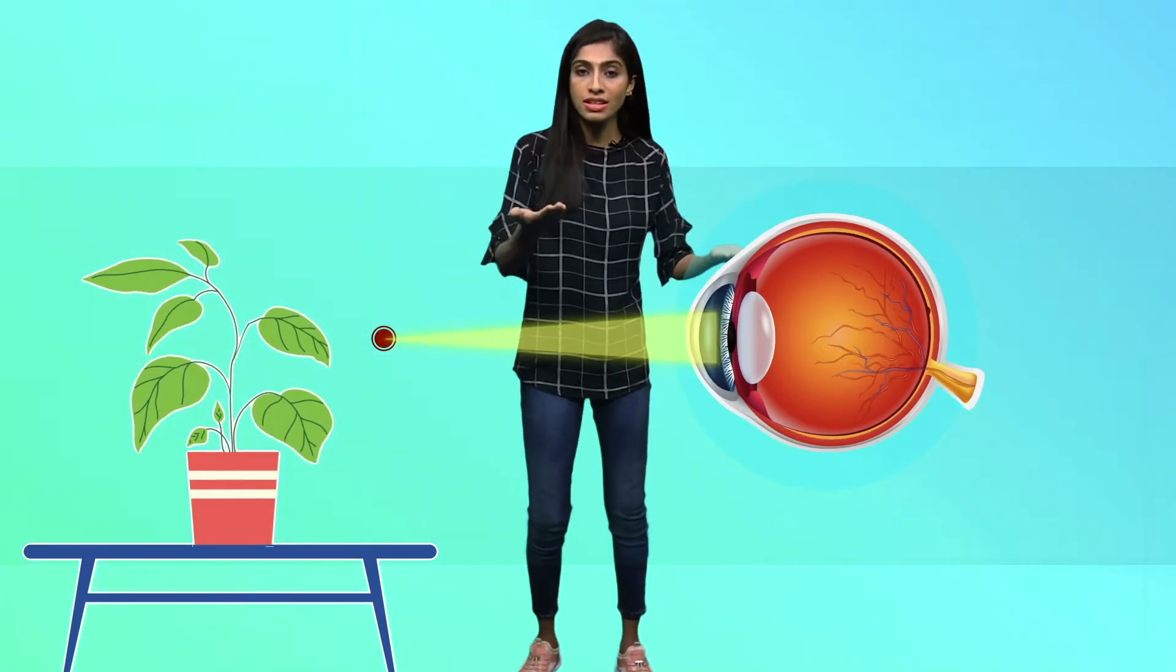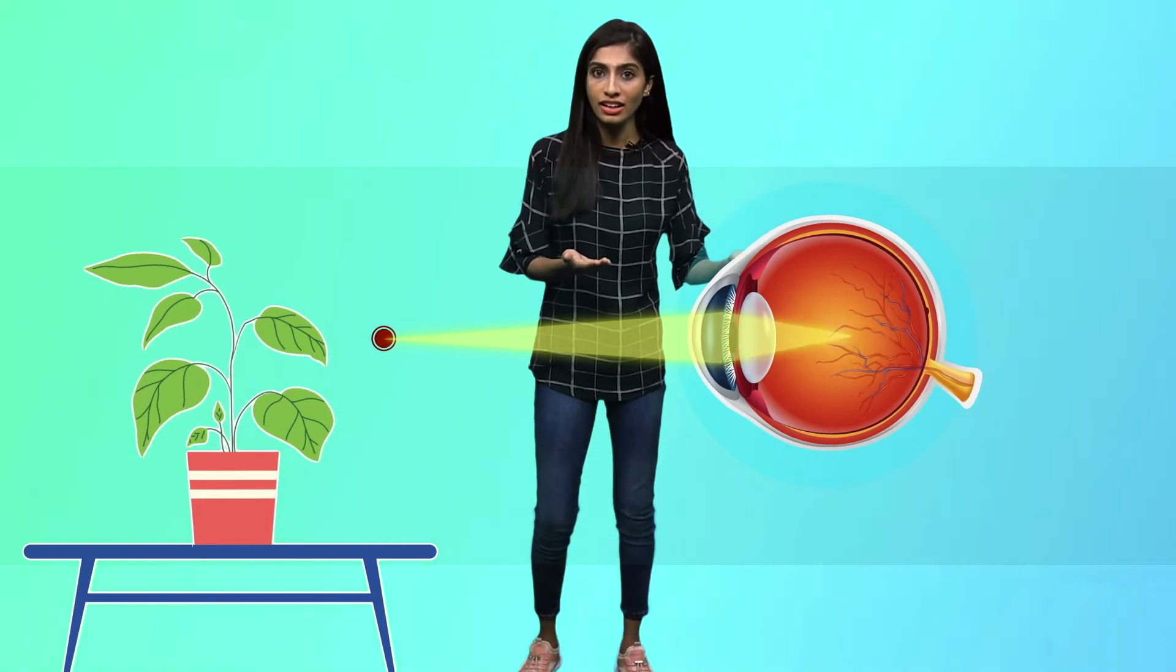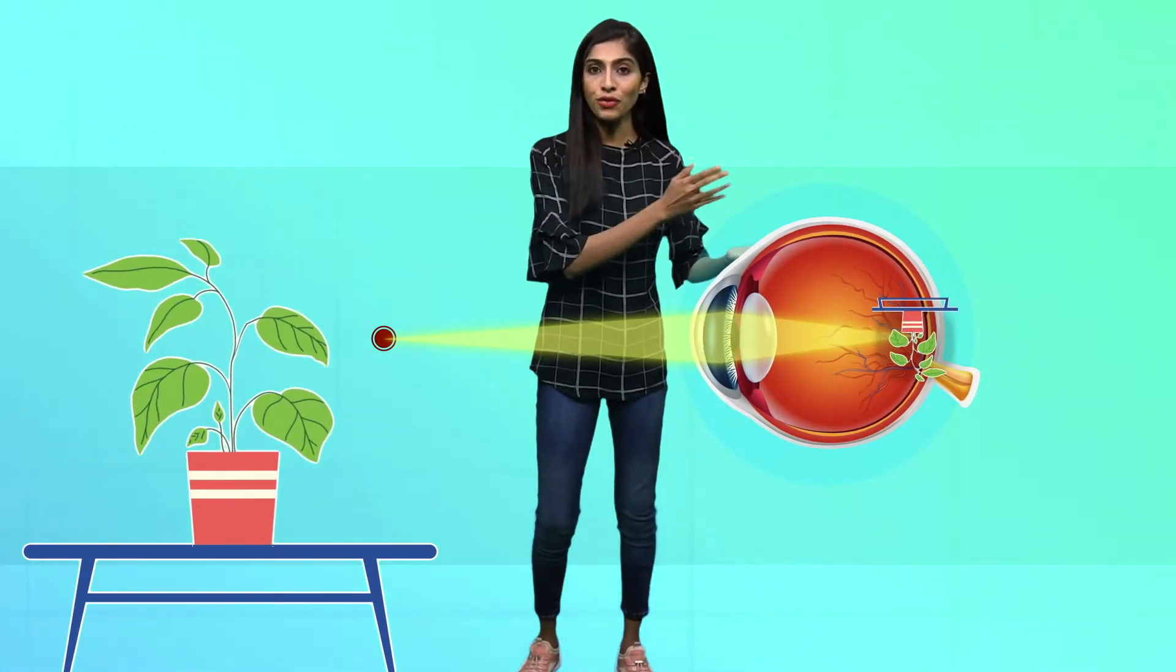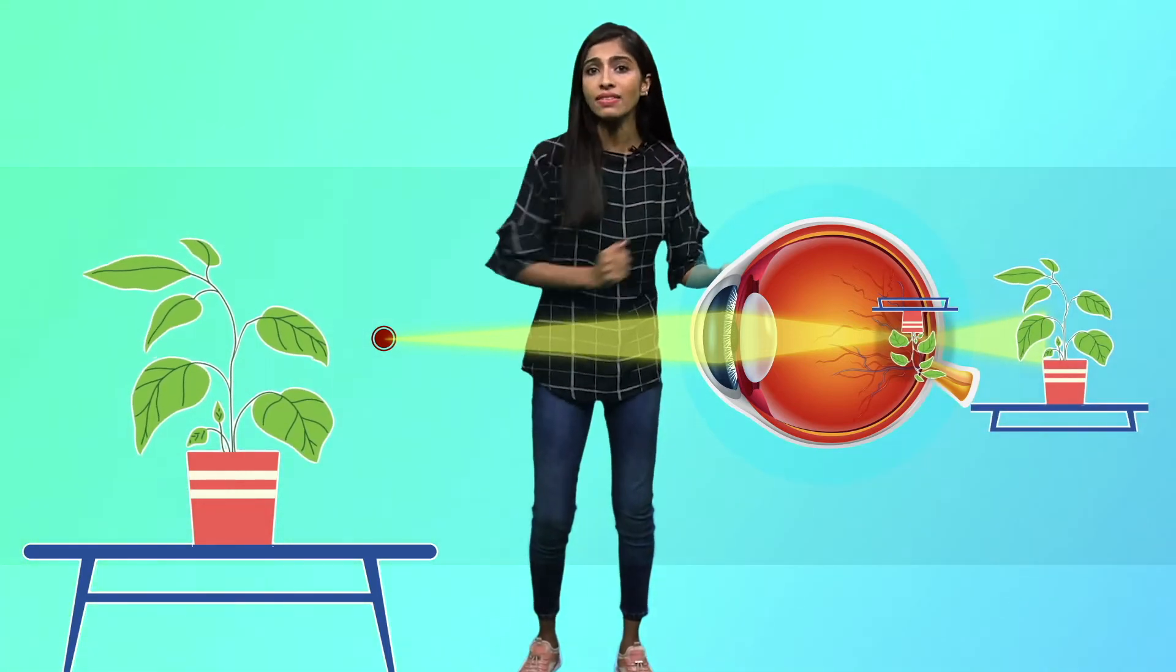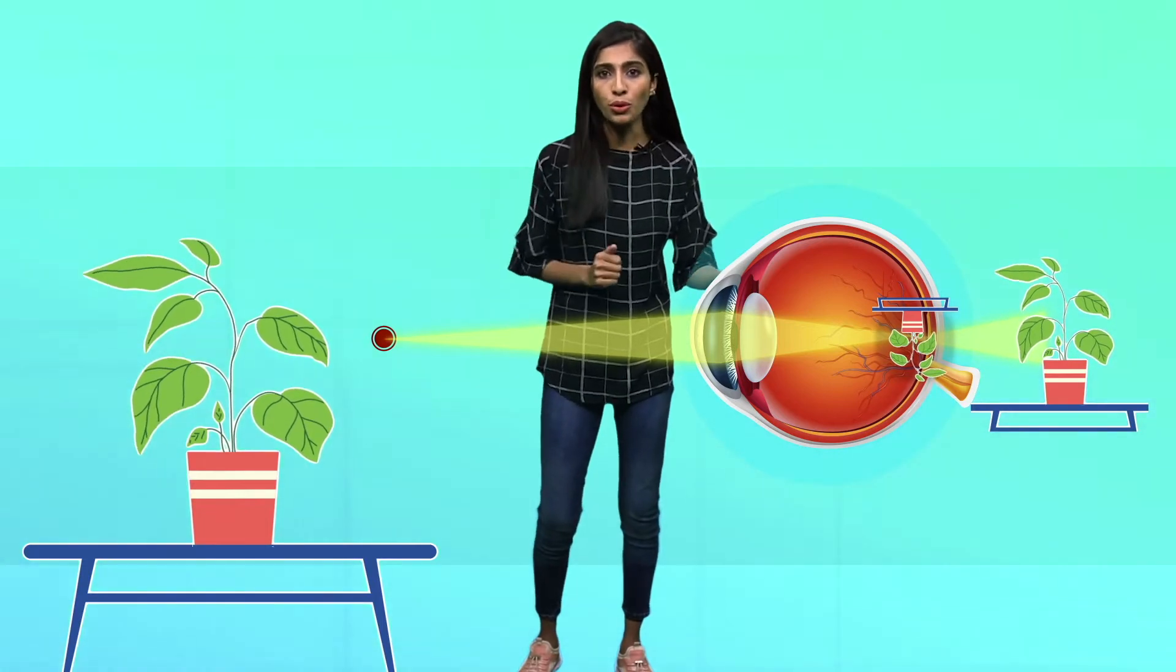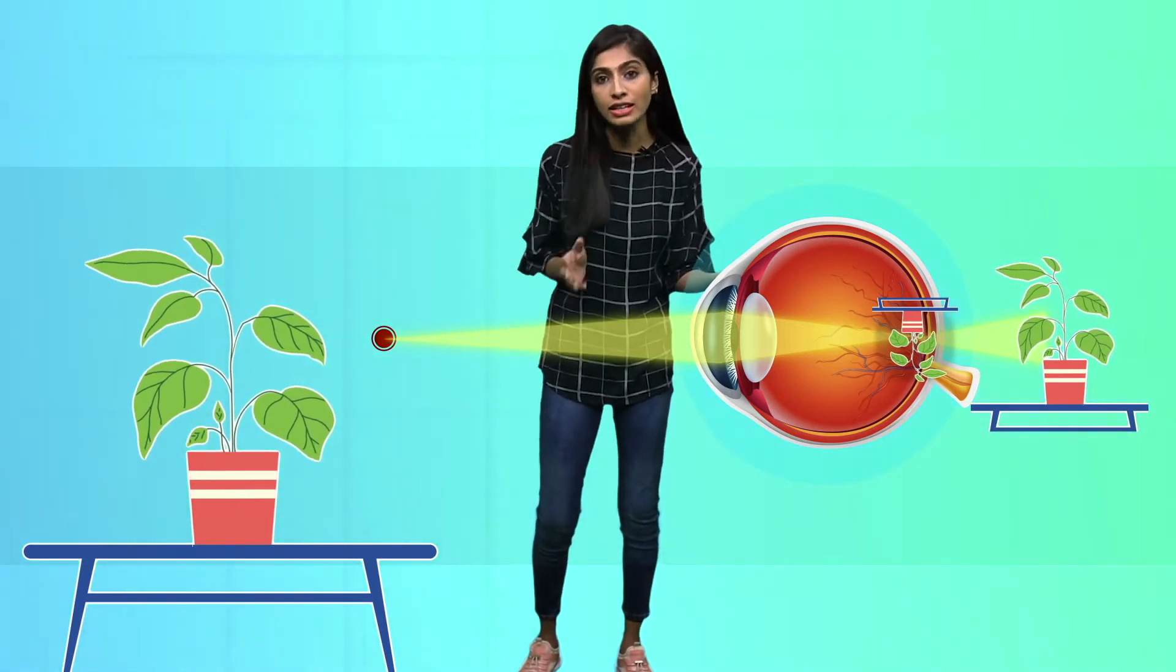The light rays come, hit the cornea, right? And then the image formation should be on retina but it's not happening there. It is happening somewhere behind the retina. So the image is not clear for the person.